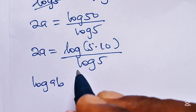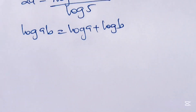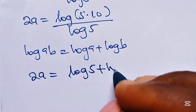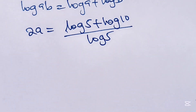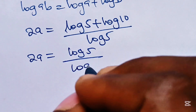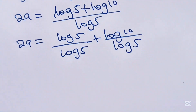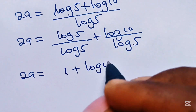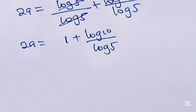When you have log of a multiplied by b, this equals log a plus log b. So we can write 2a equal to log 5 plus log 10, all divided by log 5. Splitting the fraction: log 5 divided by log 5 plus log 10 divided by log 5. So 2a equals 1 plus log 10 divided by log 5, because log 5 divides itself to give 1.